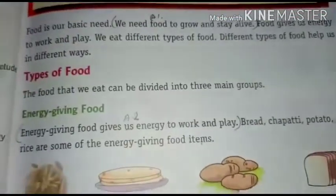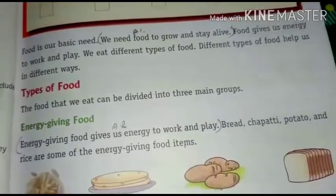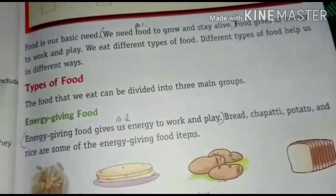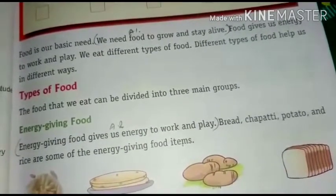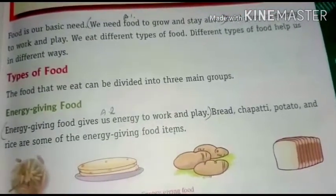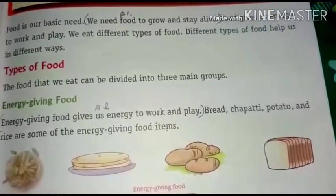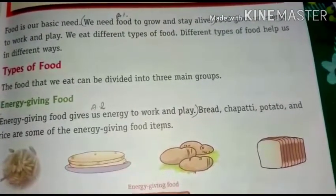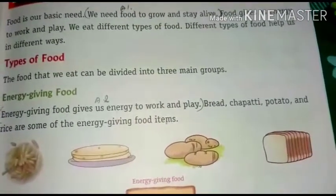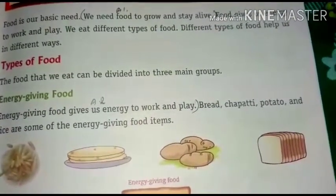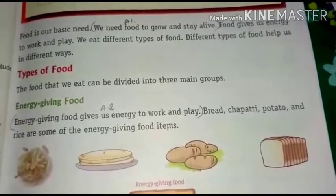Types of food: the food that we eat can be divided into three main groups. The first is energy giving food. Energy giving food gives us energy to work and play, and we get energy in our body.